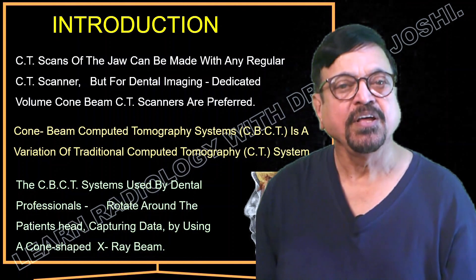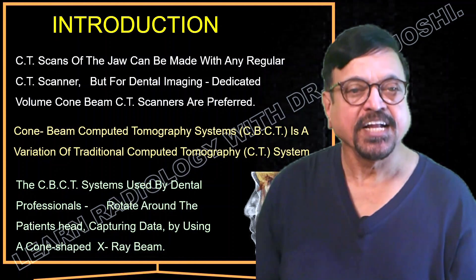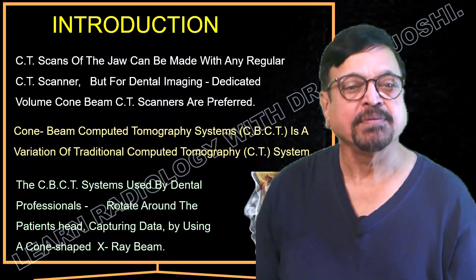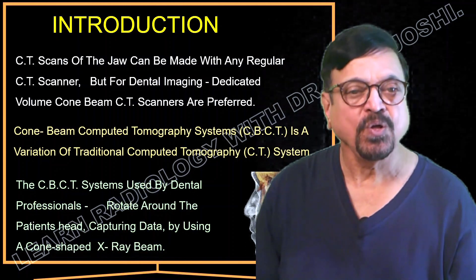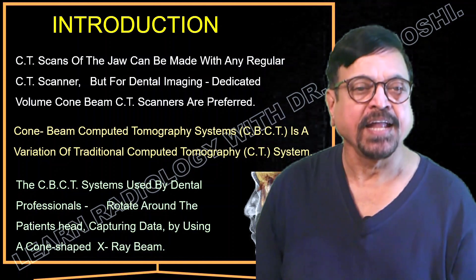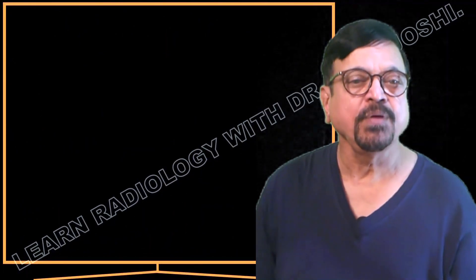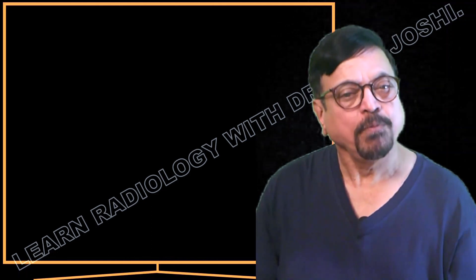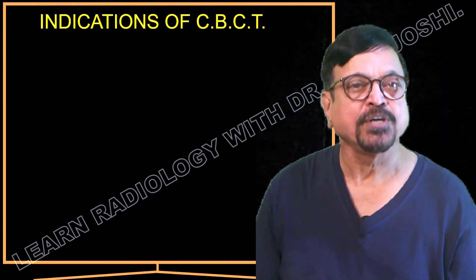The CBCT system used by dental professionals rotates around the patient's head, capturing data using a cone-shaped X-ray beam. It is a modified version of an OPG machine — in OPG there is a film on one side and an X-ray tube on the other side that rotates around the head. Similarly, CBCT is a volumetric machine and gives more volume information than an OPG machine, as it is exclusively designed for that purpose.